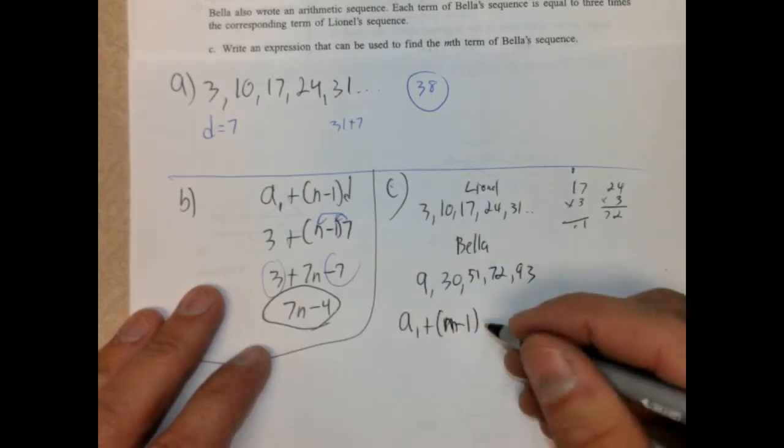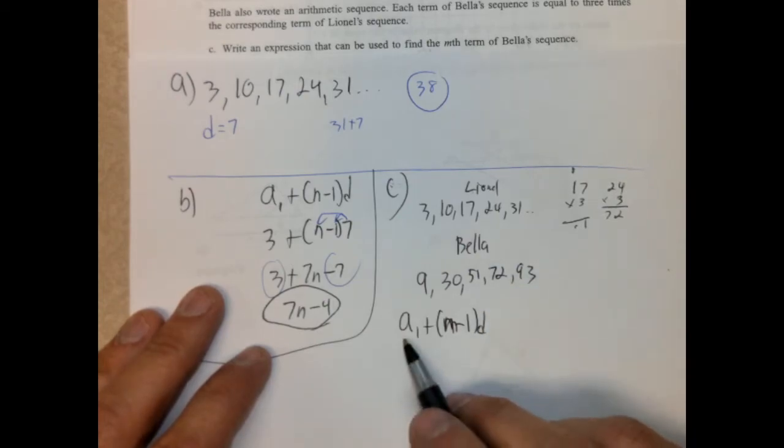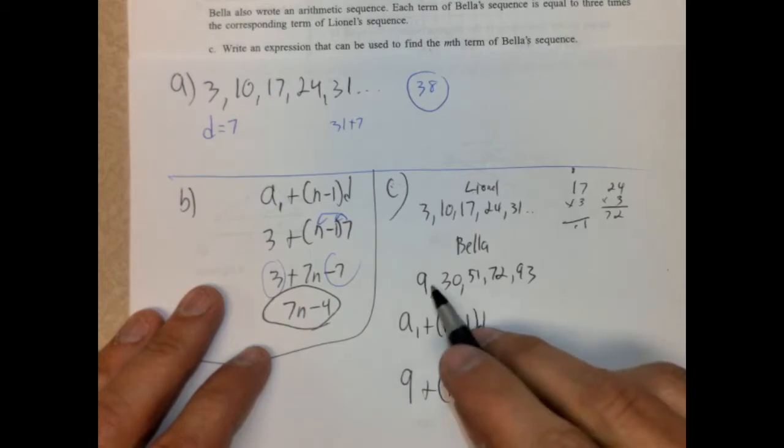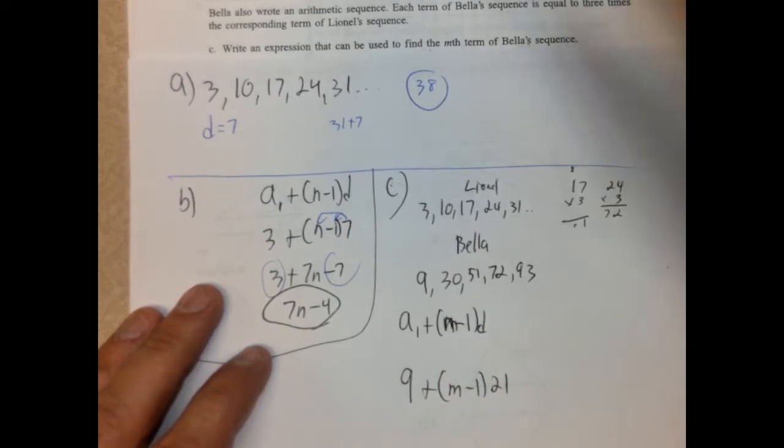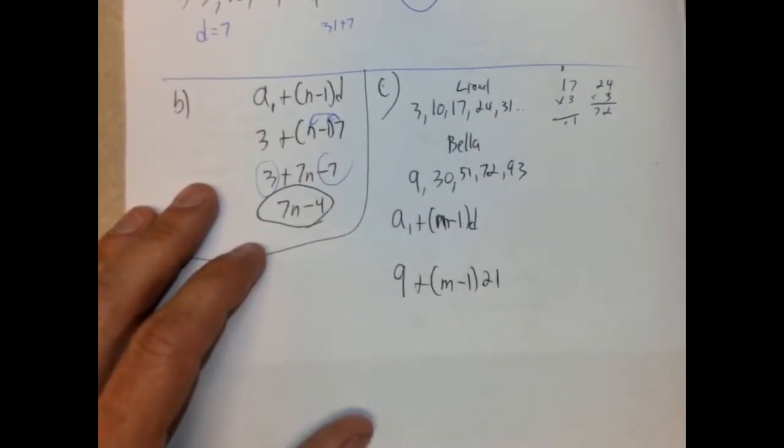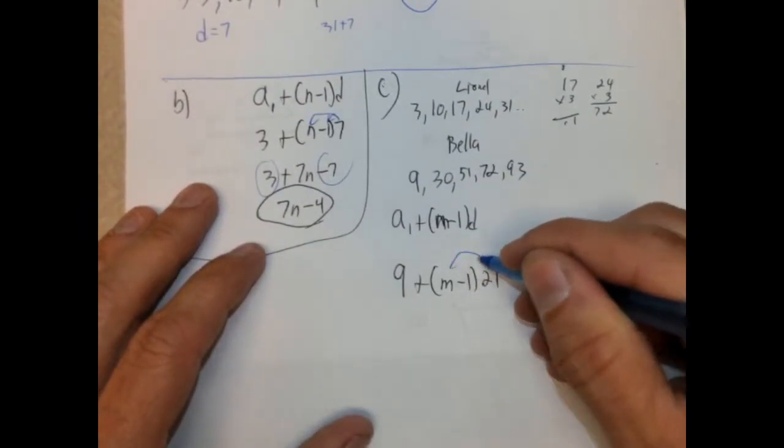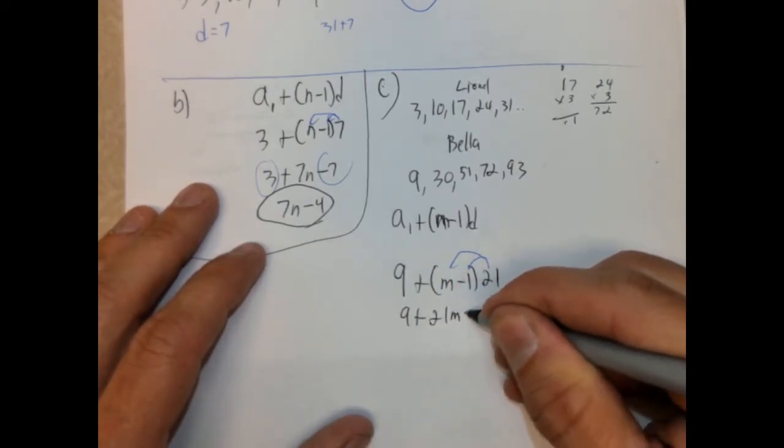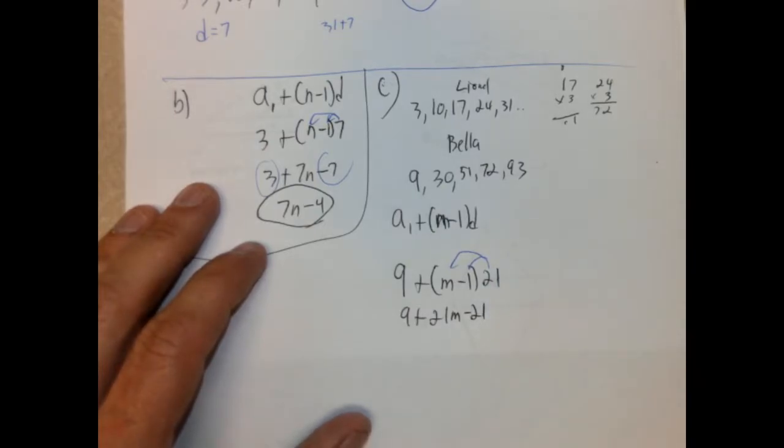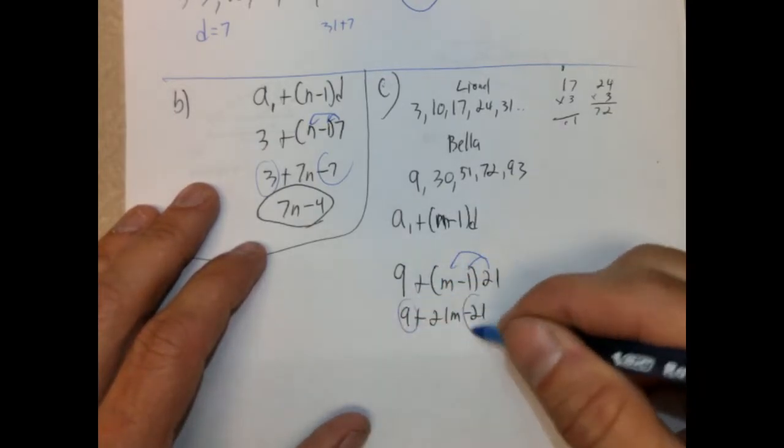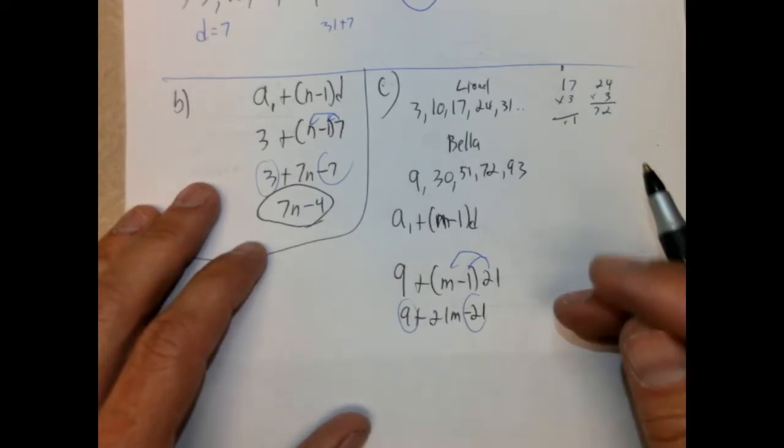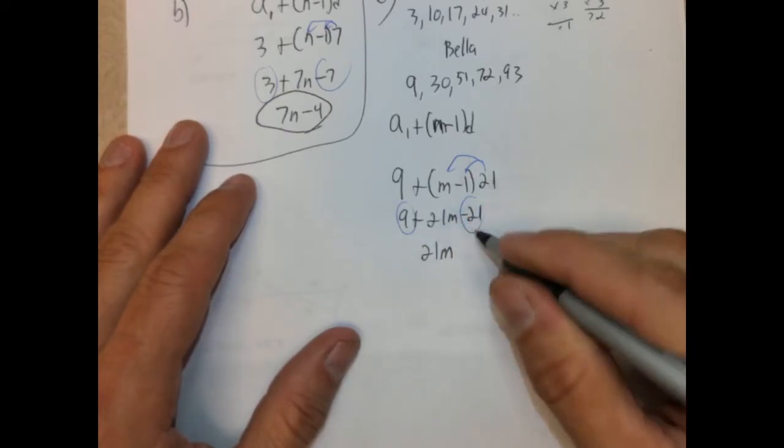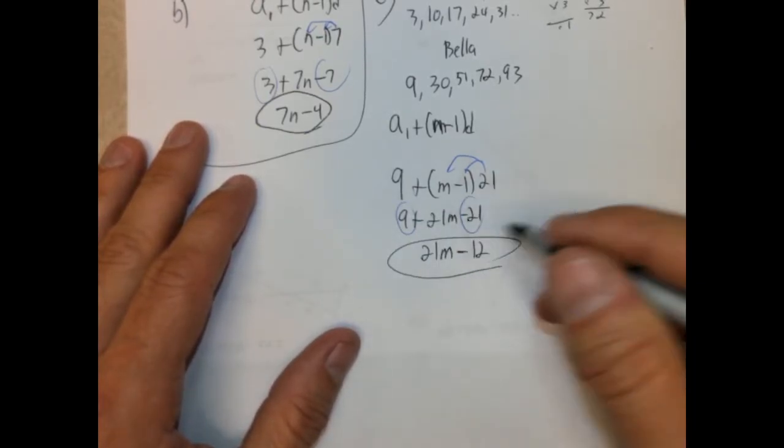So a sub 1 is 9, and the N is N minus 1. And our D is going to be 21. That's our common difference. So we're going to distribute that. So N plus 21 N minus 21, and then combine these like terms. So 9 and negative 21. Is it 12? Yeah, that's 12. So 21 N minus 12, because it's not a larger number. That's it. Okay.